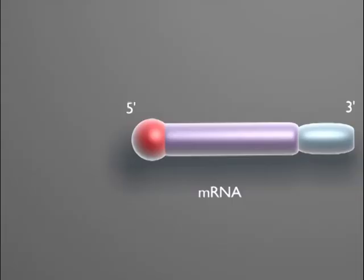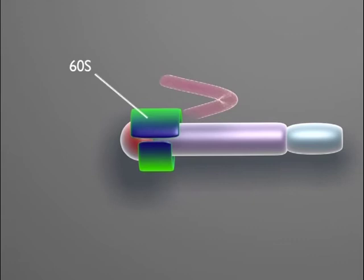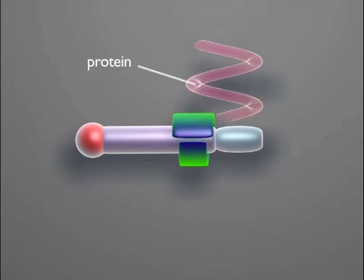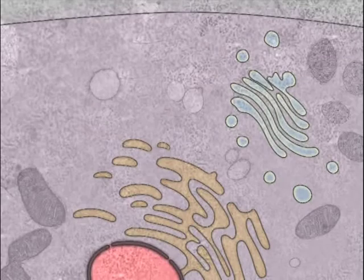For translation to begin, the small ribosomal subunit attaches to the cap at the 5' end of a messenger RNA. As soon as it reaches the first AUG codon, the big subunit joins and translation begins. Once the proteins in the cytoplasm have been produced, they enter the nucleus, where they will play a crucial role in the replication cycle.